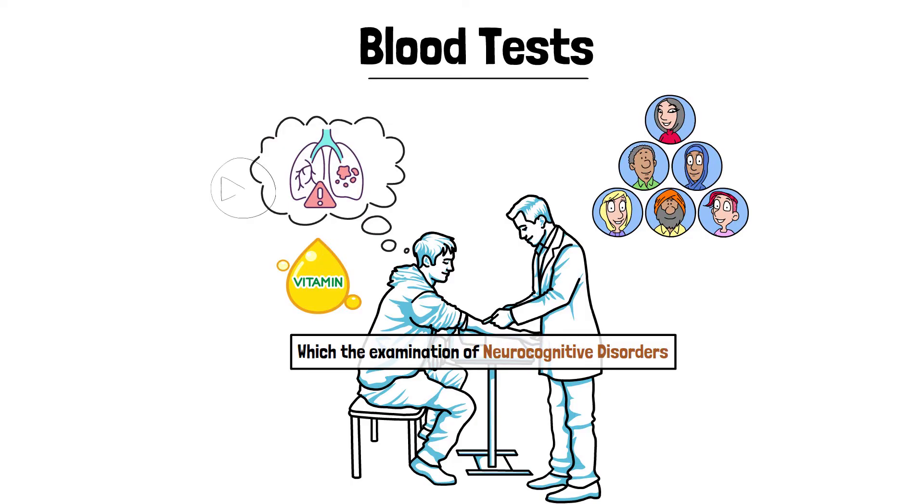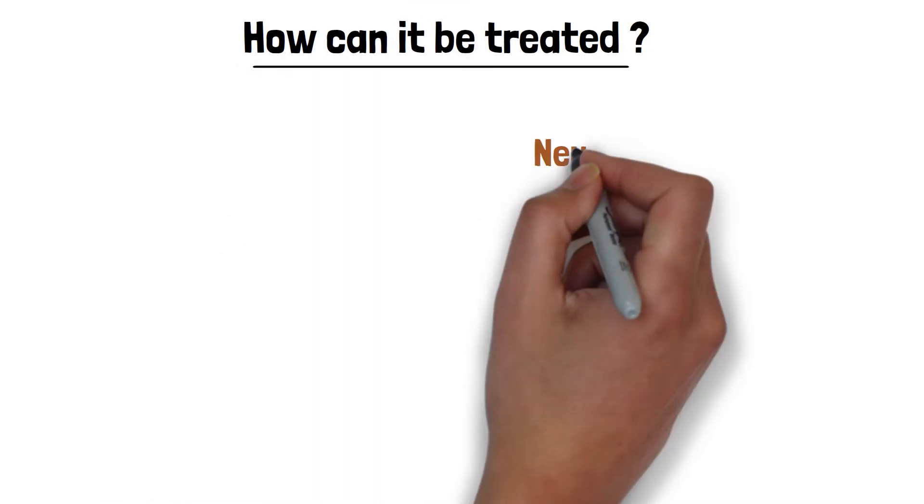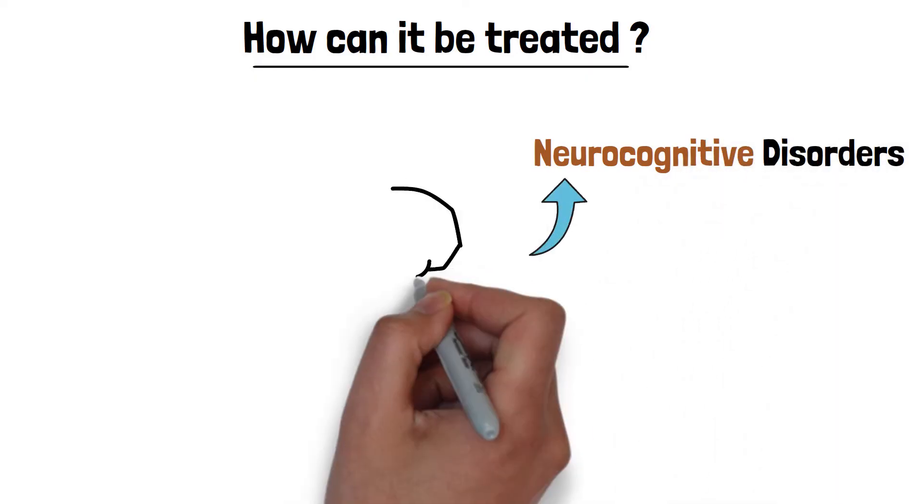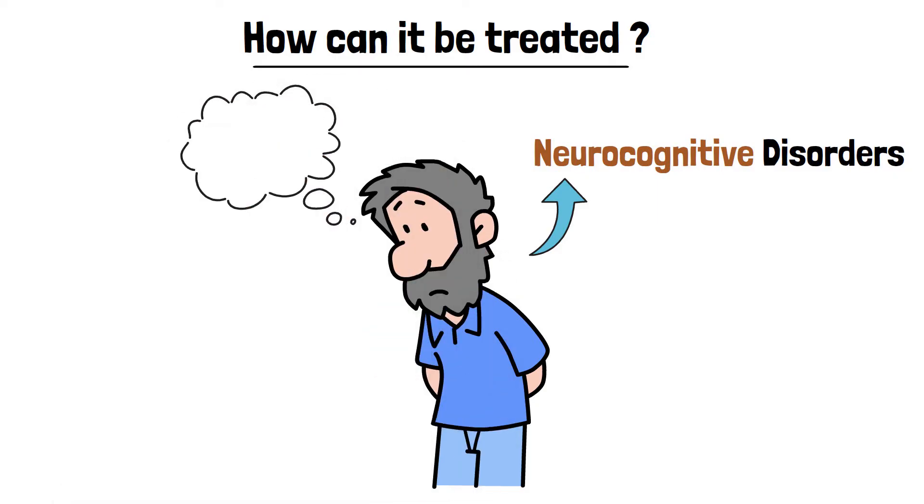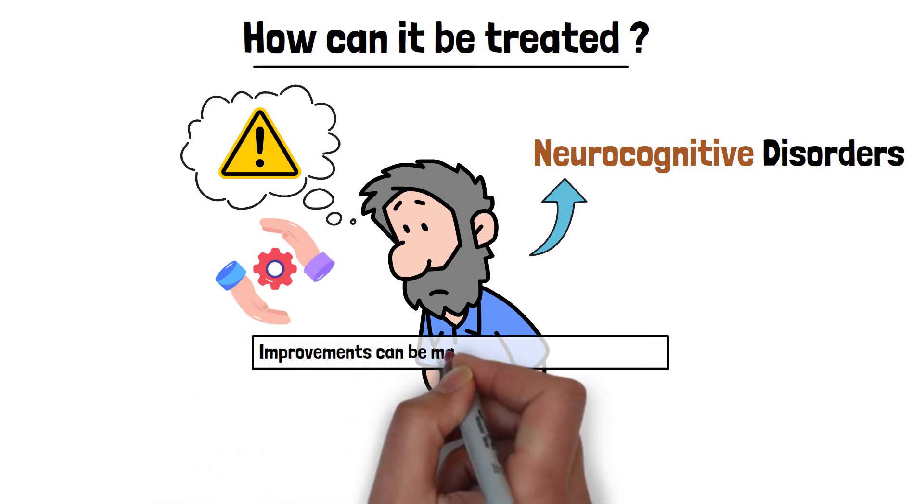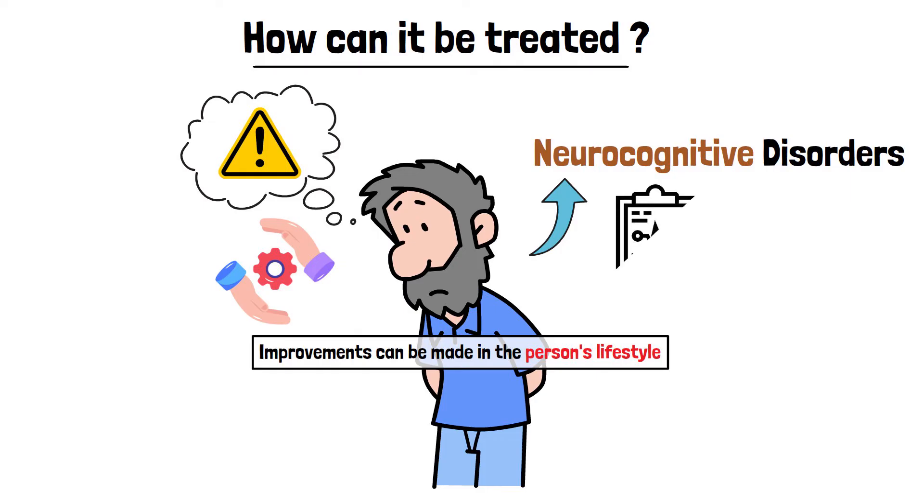Now let's move towards the next important point where we will see how it can be treated. The treatment of neurocognitive disorders, or cognitive weakness diseases, depends on the symptoms, the type of disease, and its severity. It's a condition that's difficult to cure completely. But with proper care and treatment, symptoms can be managed, and improvements can be made in the person's lifestyle. Let's look at some treatment methods.